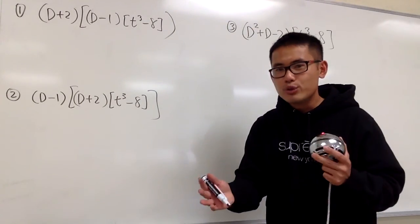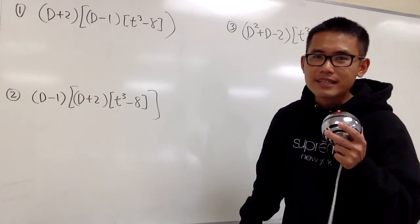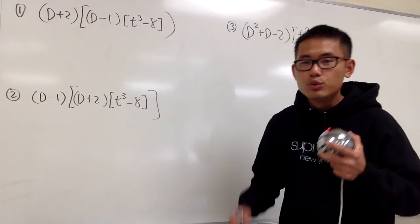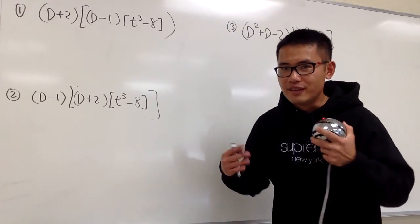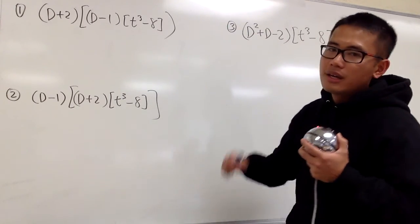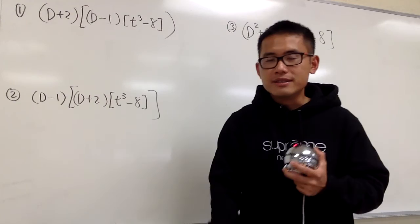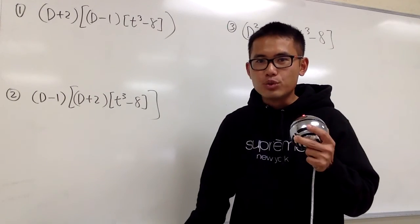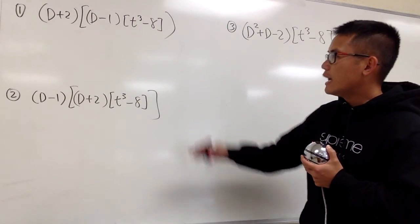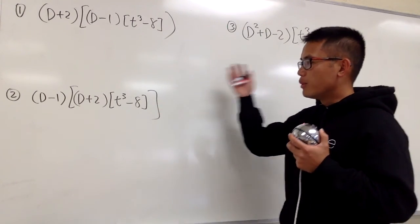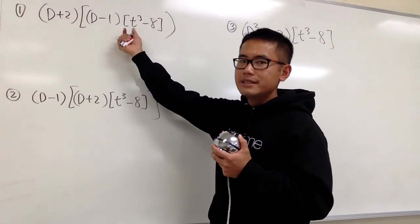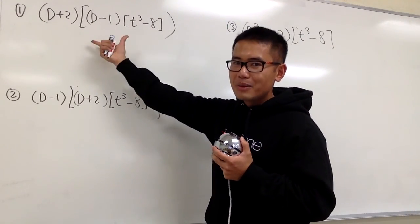In this video, I'll demonstrate how the capital D notation works. The capital D represents the differential operator — in this case, capital D represents taking the derivative with respect to t. I'll work out three examples, and we'll do this inside out.